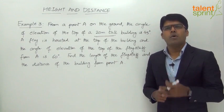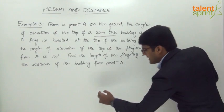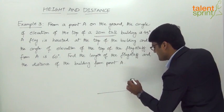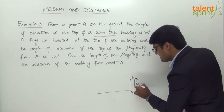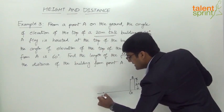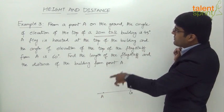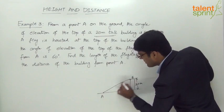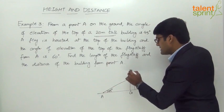We need to find the length of the flag staff and the distance of the building from point A — two measurements in total. In the diagram, this is the ground level and we have a building AB. The height of the building GB is 20 meters. The angle of elevation from point A to the top of the building B is 45 degrees.